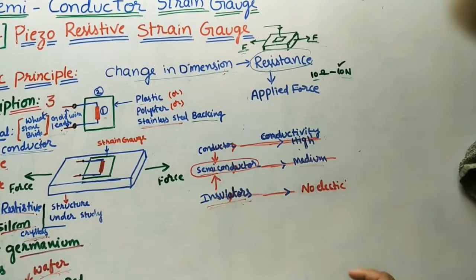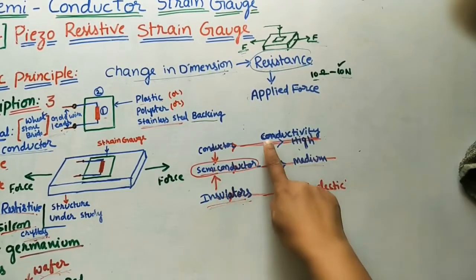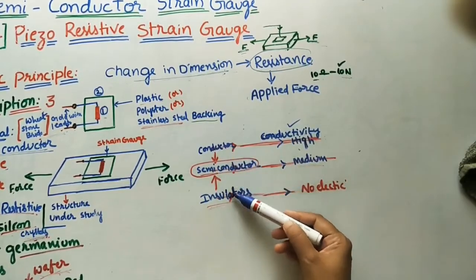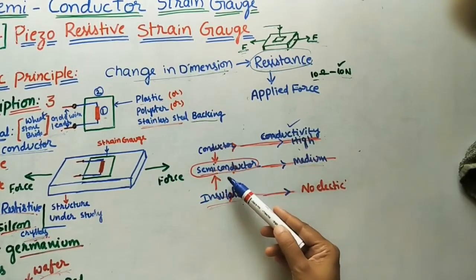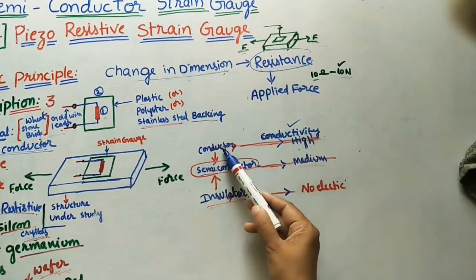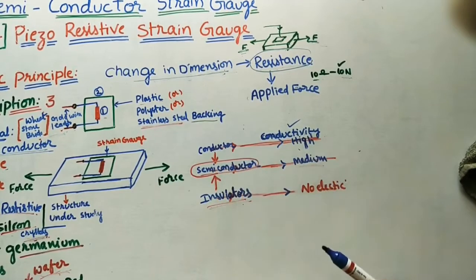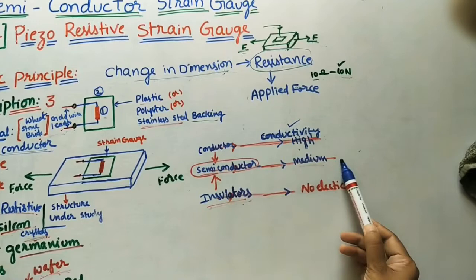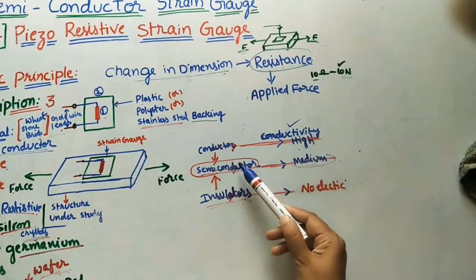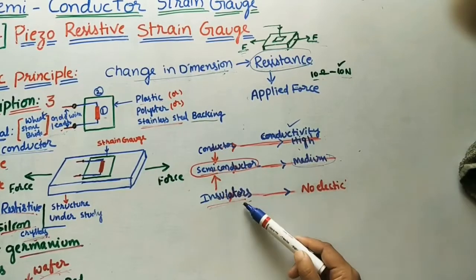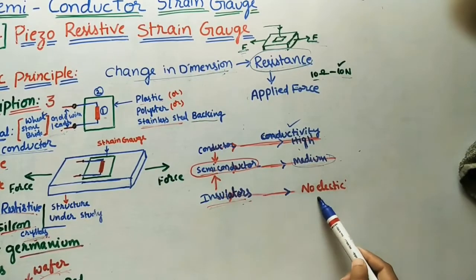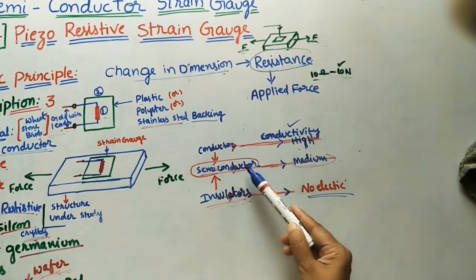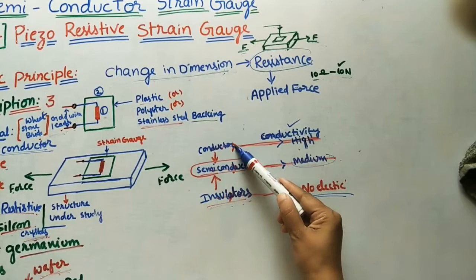Semiconductor material is defined according to conductivity — the ability to pass electricity. Materials are of three types: conductors, semiconductors, and insulators. Conductors have more conductivity and pass more electricity. Semiconductors have medium conductivity, less than conductors. Insulators do not pass electricity at all. Semiconductors have conductivity in between conductors and insulators.